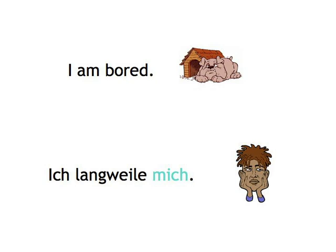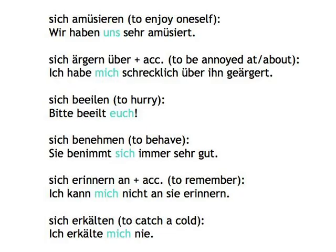Now here's a list of the most important reflexive verbs of this kind and some other more mundane ones that express an action reflexively. Sich amüsieren — to enjoy oneself. Wir haben uns sehr amüsiert. Sich ärgern über plus the accusative — to be annoyed at/about. Ich habe mich schrecklich über ihn geärgert. Sich beeilen — to hurry. Bitte beeilt euch. Sich benehmen — to behave. Sie benimmt sich immer sehr gut. Sich erinnern an plus the accusative — to remember. Ich kann mich nicht an sie erinnern. Sich erkälten — to catch a cold. Ich erkälte mich nie.